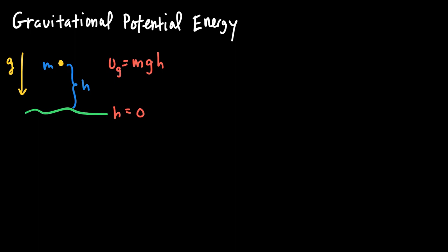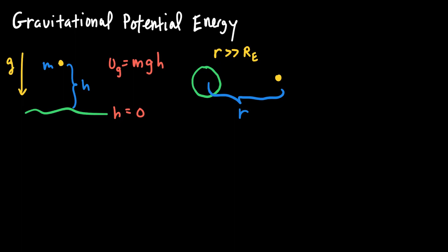This works as long as we're close to the surface of the earth and our changes in height are not very big. But if this circle is the earth and I'm at a point way out here — a distance much larger than the radius of the planet — I'm a distance r away from the center, where r is much bigger than the radius of the earth. Once we have big changes in r, the gravitational field lowercase g is no longer constant, so we can't say the gravitational potential energy at point p equals mgh.